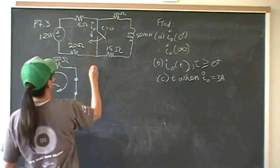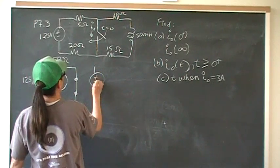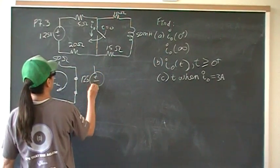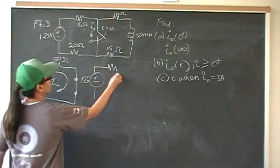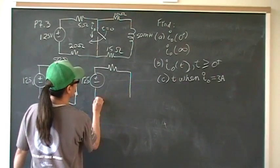After the switching happens, we have a circuit that looks like this. Okay. This is going to be closed. The switch is now closed.